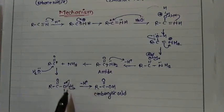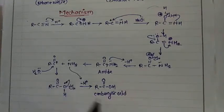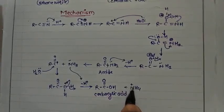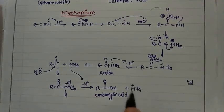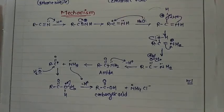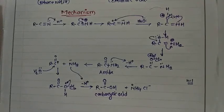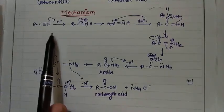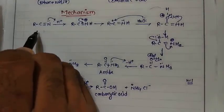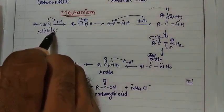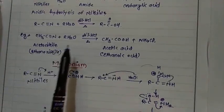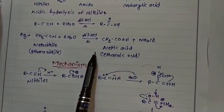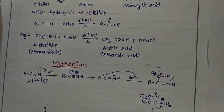The released NH₃ picks up H⁺ to form NH₄⁺, and with the Cl⁻ from HCl, the byproduct is ammonium chloride (NH₄Cl). So in the next video, we will see the next method of preparation of carboxylic acid.